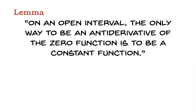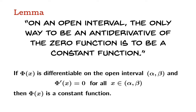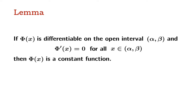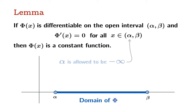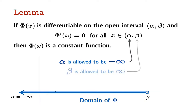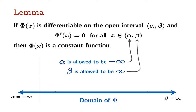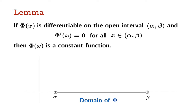So let's go back to our lemma. The official statement: if phi of x is differentiable on the open interval alpha to beta, and phi prime of x is equal to zero for all arguments in that open interval, then phi has to be a constant function. Now we're going to prove this lemma. Alpha and beta are possibly real numbers, so the domain of phi would look like a bounded open interval. But we're going to allow alpha to stand for negative infinity and beta to stand for infinity — possibly both at the same time. The proof does not depend on whether or not the open interval is bounded.